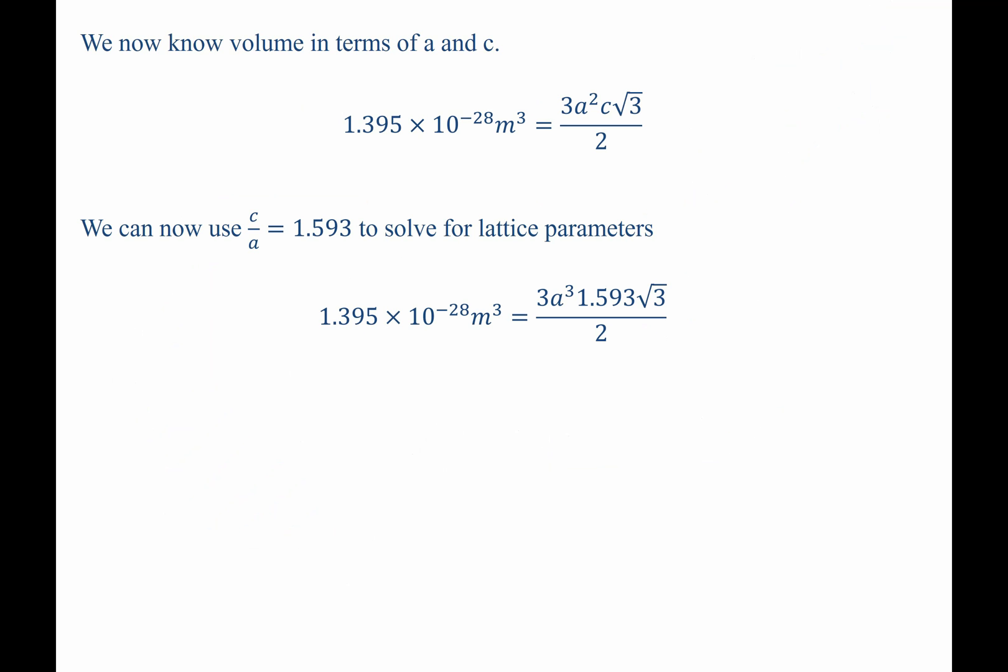Plugging in c equals a times 1.593 into this expression, we can now solve for a. Taking the cubed root of each side will allow us to go from a cubed to a, and now we finally solve for a as 3.23 times 10 to the negative 10 meters, or in other words, 3.23 angstroms.